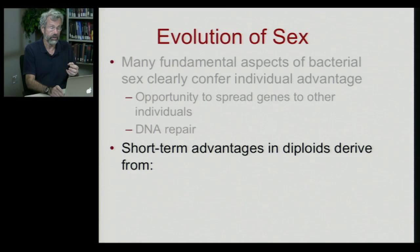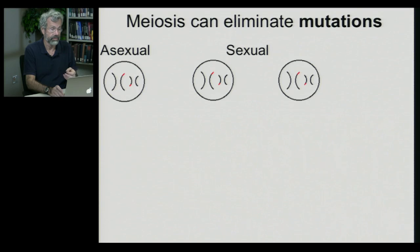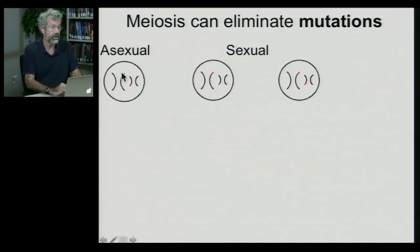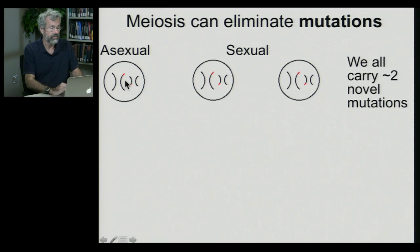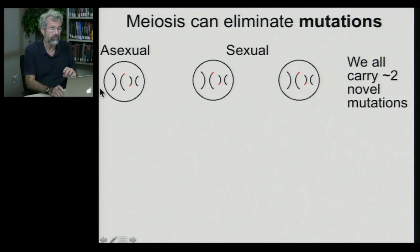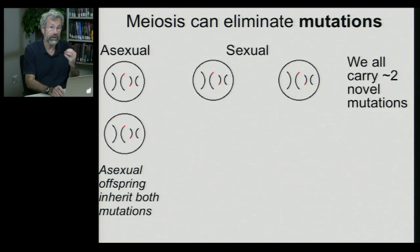Short-term advantages in diploids are likely to derive from two different sources. First is from mutation deletion. We have our asexual organism with its diploid genome — homologous partners of the chromosomes, a long homologous pair and a short homologous pair — and two sexual individuals that are likewise about to reproduce. There are always mutations, indicated by little red dots on the ends of each chromosome, showing that during the lifespan of each individual it has obtained two new mutations. In the asexual, they're all passed on.